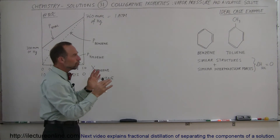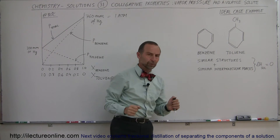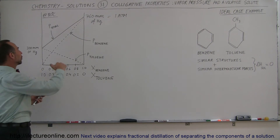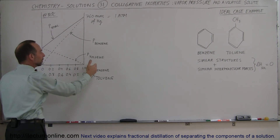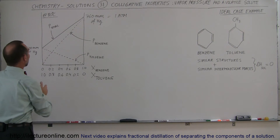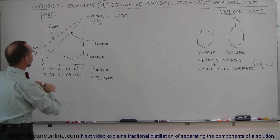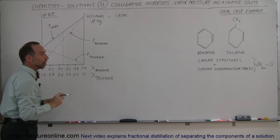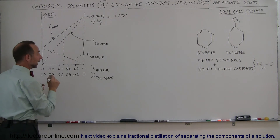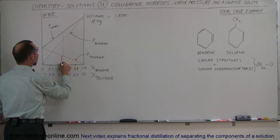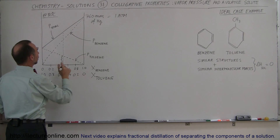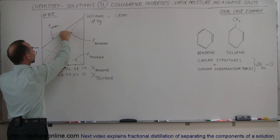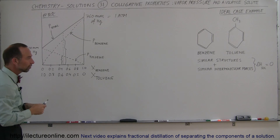Since the structure of the two molecules are virtually the same, the intermolecular forces are virtually the same, and the enthalpy of solution equals zero, we have what we call an ideal case. The total pressure of the solution is simply the sum of the individual vapor pressures of the two components. For example, in a half-and-half situation — equal moles of benzene and toluene — you can see the contribution of toluene's vapor pressure plus the contribution of benzene's vapor pressure, and the total is their sum.